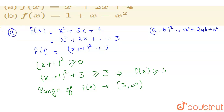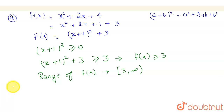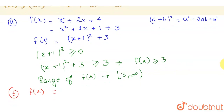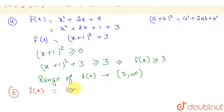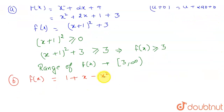Now let's find the range for the second function, f(x) = 1 + x - x². We again try to make the quadratic into a whole square term. First, we remove the minus sign by taking it common from the x terms, writing it as 1 - (x² - x).